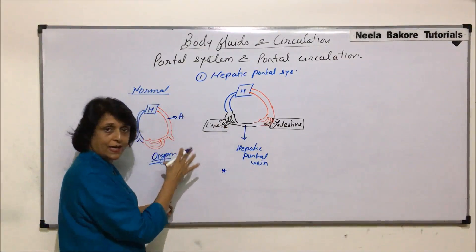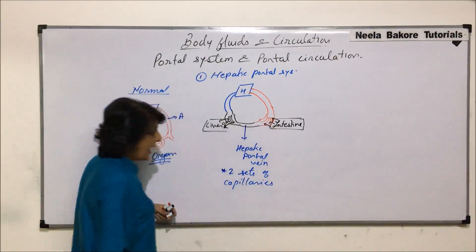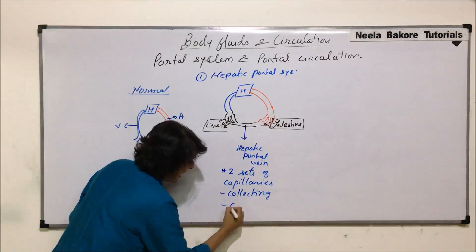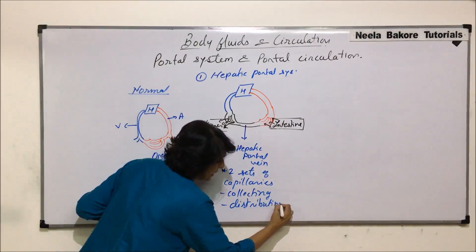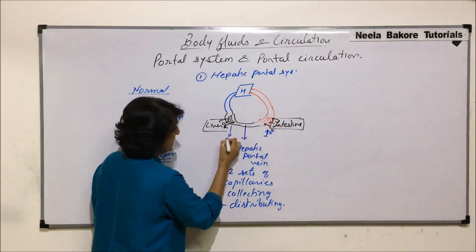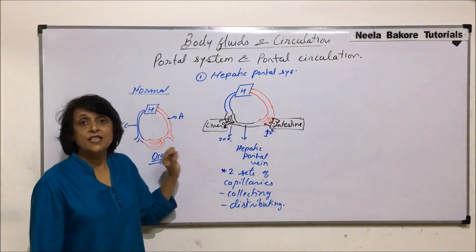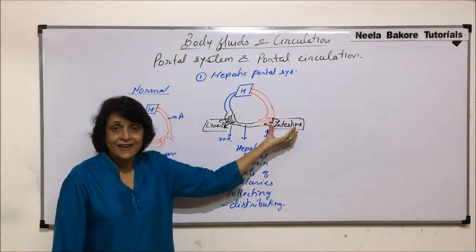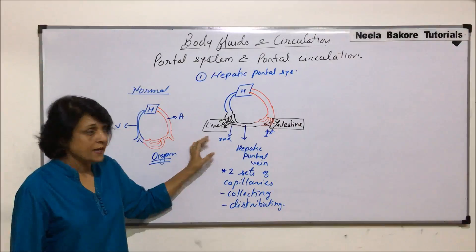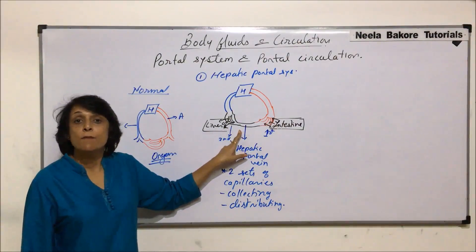Any portal vein would have two sets of capillaries — these are termed as collecting capillaries and distributing capillaries. A portal vein is the vein which collects material from one organ and breaks into a second set of capillaries, offloading that material into an intermediate organ. The name of the portal vein depends upon which organ it is offloading that material to.